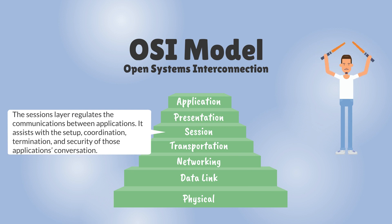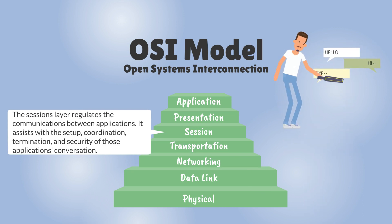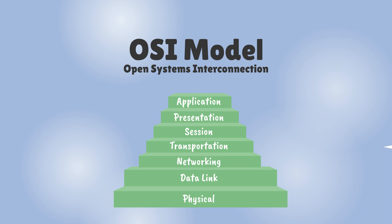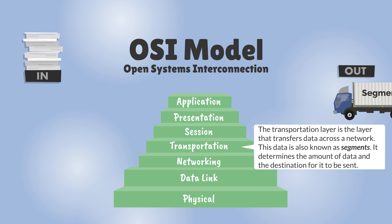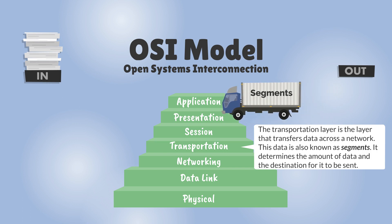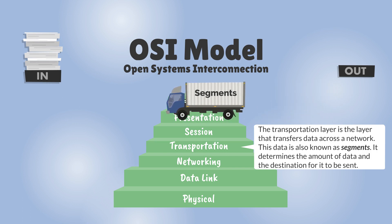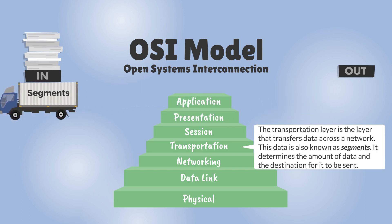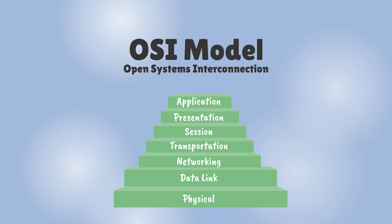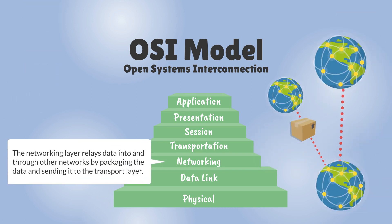The sessions layer regulates the communications between applications. It assists with the setup, coordination, termination, and security of those applications' conversations. The transport layer is the layer that transfers data across a network — this data is also known as segments. It determines the amount of data and the destination for it to be sent.